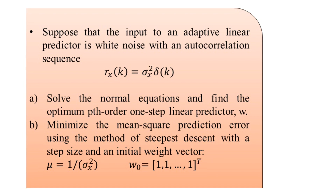From the knowledge of this autocorrelation sequence, we can determine both the autocorrelation matrix and the cross-correlation between the desired signal and the input signal x(n). We now find the solution to Part A, using the normal equations as covered in topics one, two, and three of the current chapter on adaptive filtering.